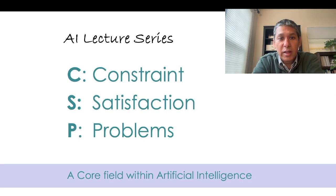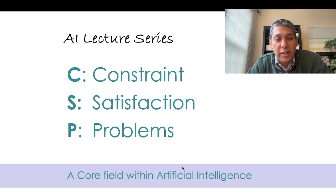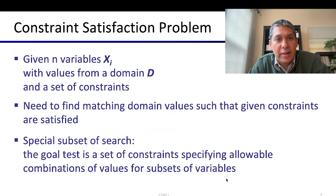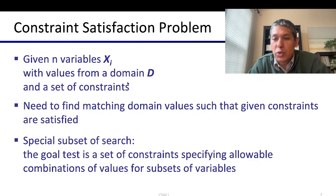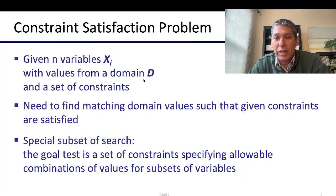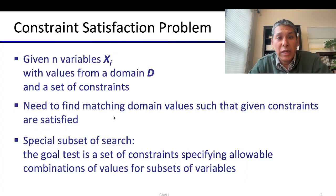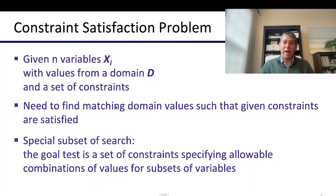Constraint satisfaction problems — CSP — is what we are studying today. CSP is a core field within AI. A CSP is a very simply defined problem: you're given n variables X1 through Xn, their values can be within domains D1 through Dk, and you're given a set of constraints.